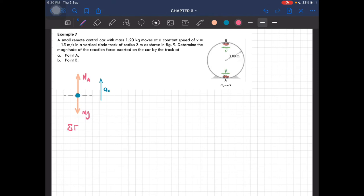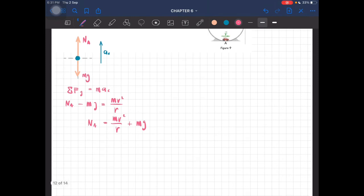So total force y is equal to ma_c, and then this is N_A minus mg equal to m v squared over r. And then we have to find N, so N_A is just basically m v squared over r plus mg.